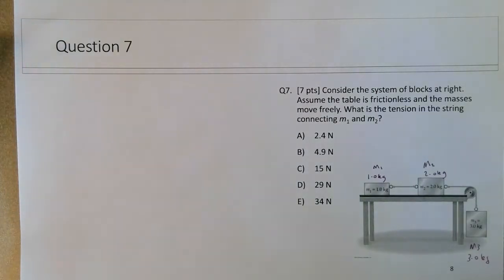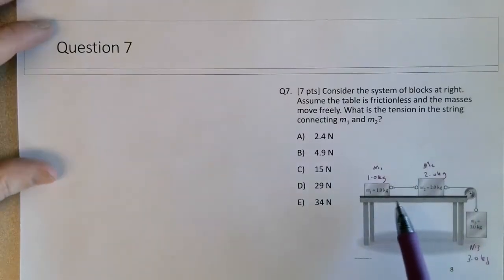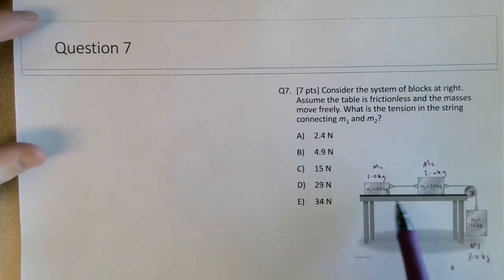But I intend to treat these problems slightly differently. I think that since it's a horizontal table, it's frictionless, the only thing driving the whole system is the external weight force that is acting on the M3 mass, the hanging mass.